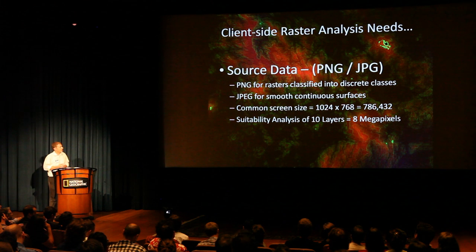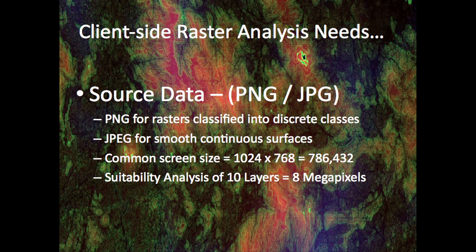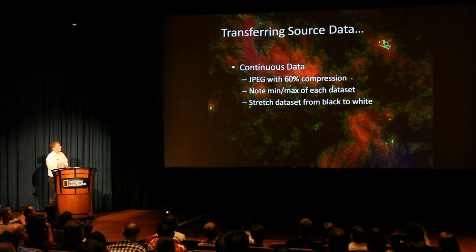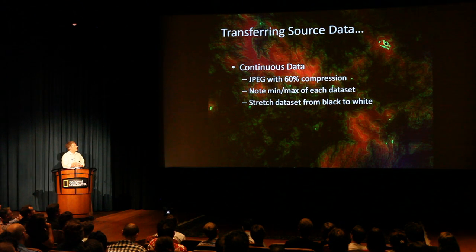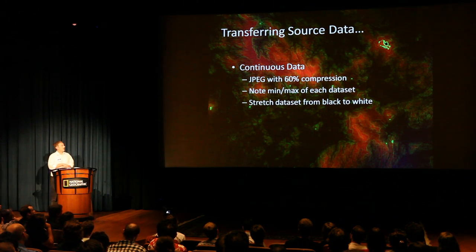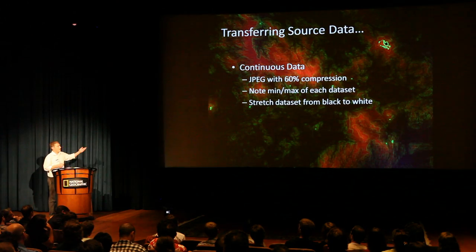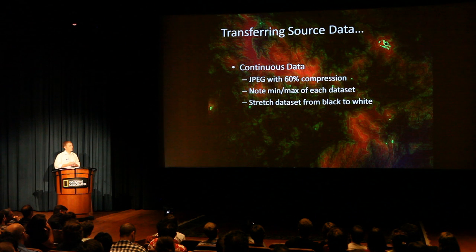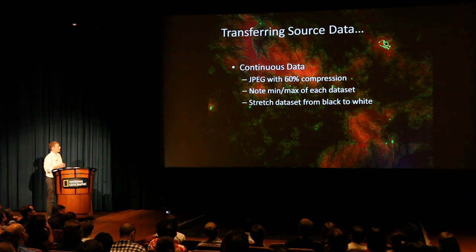We're talking about PNGs and JPEGs as source data. PNGs for classified data — say you have 32 classes of land cover. JPEGs for elevation or something continuous. When transferring continuous data, you want to use JPEG compression, maybe 60% compression, 50 if you're daring. You want to note the min-max of the dataset so you can translate it once it gets to the client, because it's just colors at that point.